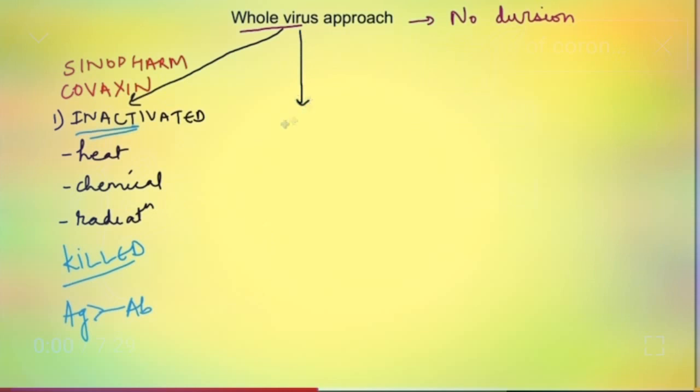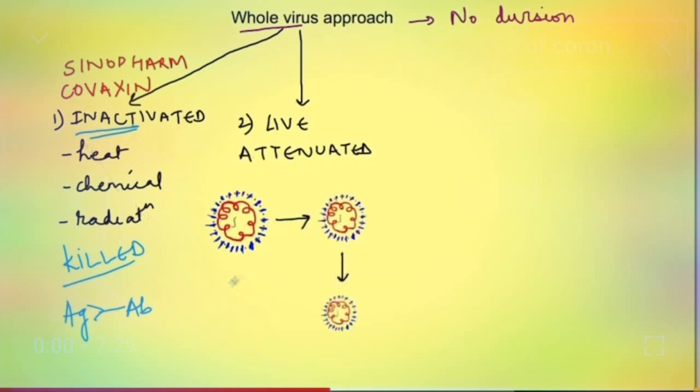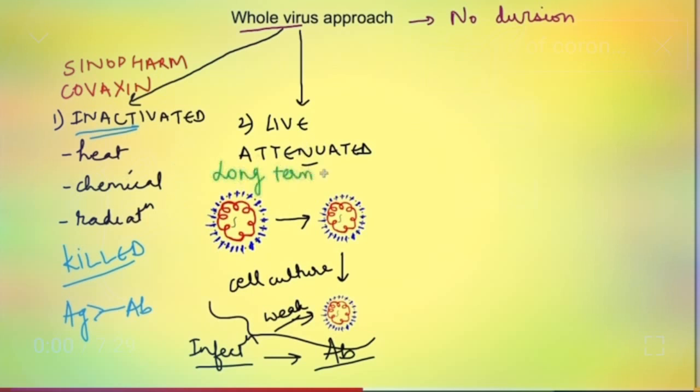Another approach for using whole virus is use of live attenuated vaccine. In this the pathogen is made very weak by growing it repeatedly over cell cultures. This kind of live attenuated virus vaccine produces an infection which generates an immune response and the virus is also able to replicate a bit but because it is a weak virus it is not able to cause a disease even though we are infected. Actually these kind of live attenuated vaccines can produce long term immunity compared to killed virus vaccines which actually require multiple booster doses.